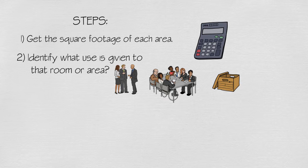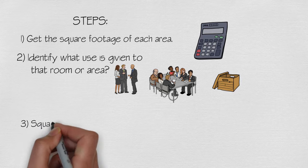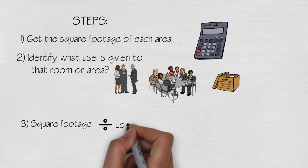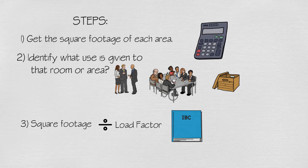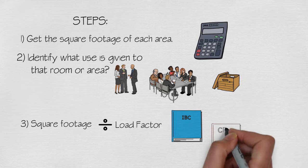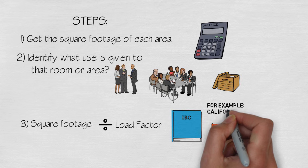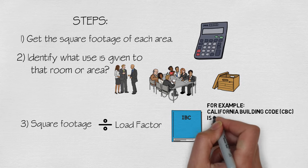Once you have the square footage, you must divide such square footage by the load factor provided by the building code. Most states use the International Building Code or IBC. Other states are based on the IBC and therefore the code sections and tables are usually the same.